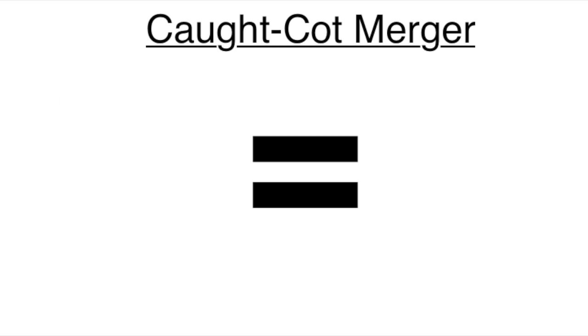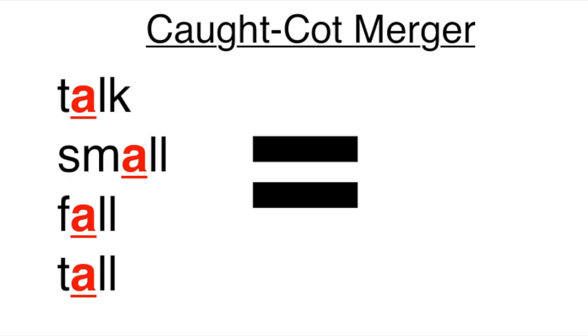And not just those two words, the vowel in talk, small, fall, tall, and any other word with that vowel in it is pronounced exactly the same as the vowel in rock, doll, clock, bomb, etc.